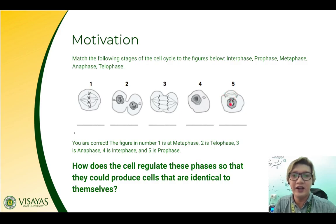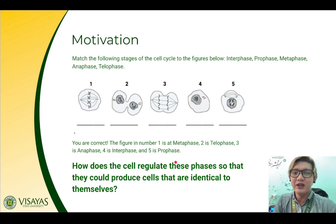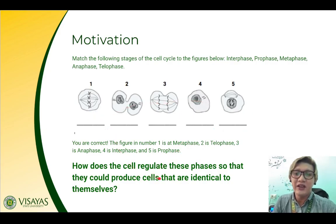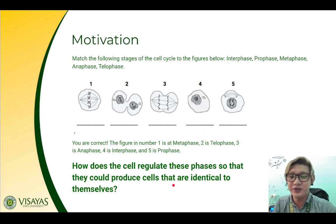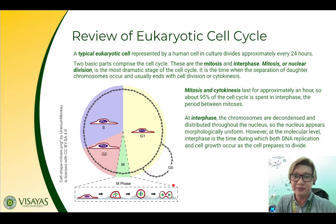These cells are actually animal cells. So the question is, how does the cell regulate these phases so that they could produce cells that are identical to themselves? We know that is very important in mitosis — that the daughter cells will be identical to that of their parent cells.